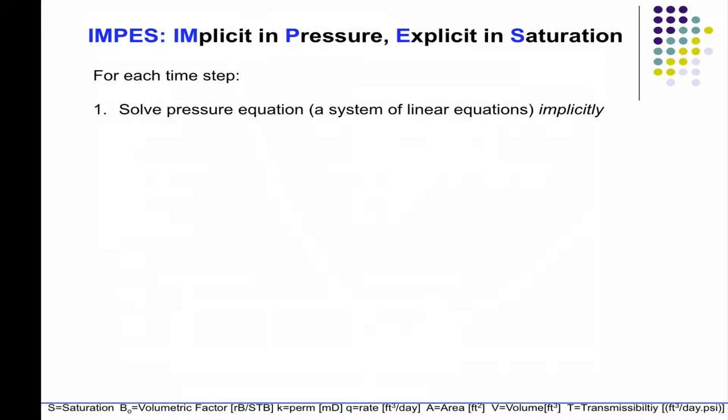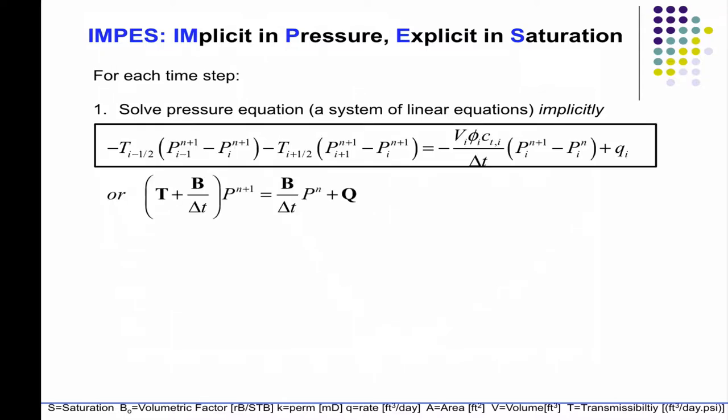So at each time step, we're going to solve the pressure equation that's here. This is what I was looking for, that BO over BW. In this case, you're not injecting or producing oil, so that Q sub zero is not over there, and you don't have that B over BW doesn't show up there.